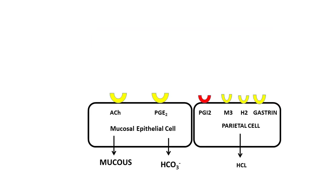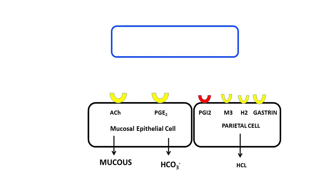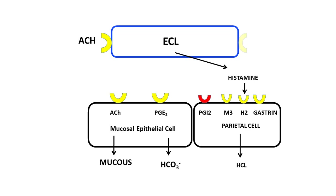The third cell we need to know about is the enterochromaffin-like cell. This cell produces histamine, which binds to H2 receptors present on the parietal cell and stimulates the parietal cell to release more hydrochloric acid. The enterochromaffin-like cell is under the influence of two receptors: the receptor for acetylcholine and a receptor for gastrin. When both these receptors are stimulated, it causes the enterochromaffin-like cell to release more histamine and ultimately increases hydrochloric acid secretion by the parietal cell.